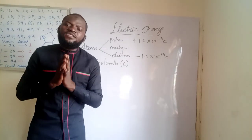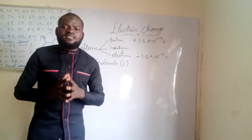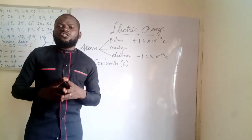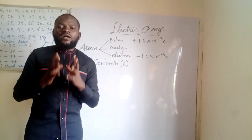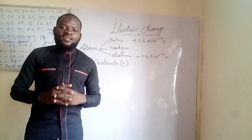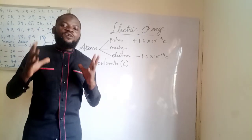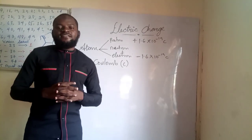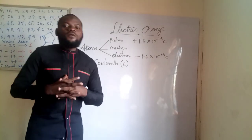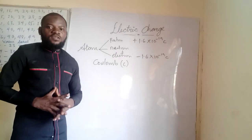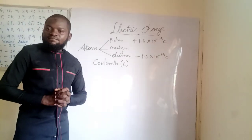From this, we can deduce that charges are quantized. The smallest charge you can ever have in this universe is 1.6 × 10⁻¹⁹ coulombs, and any other charge is a multiple of this. So charges are quantized.